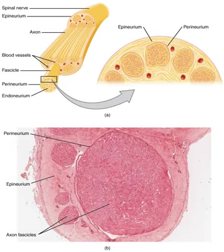Nerves can be categorized into two groups based on where they connect to the central nervous system. Spinal nerves innervate much of the body and connect through the vertebral column to the spinal cord. They are given letter-number designations according to the vertebra through which they connect. Cranial nerves innervate parts of the head and connect directly to the brain, especially the brainstem. They are typically assigned Roman numerals from 1 to 12, although cranial nerve 0 is sometimes included.